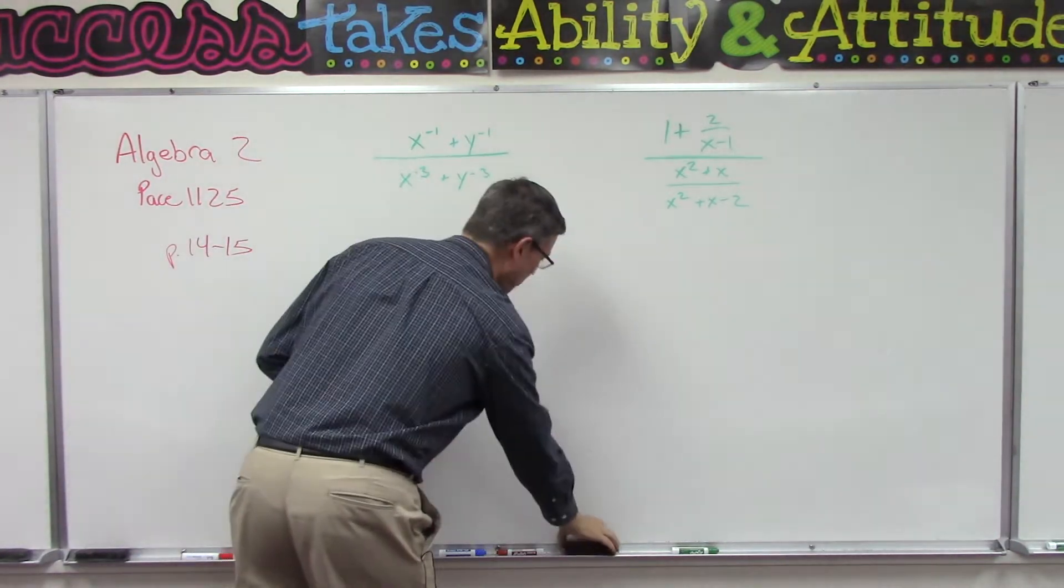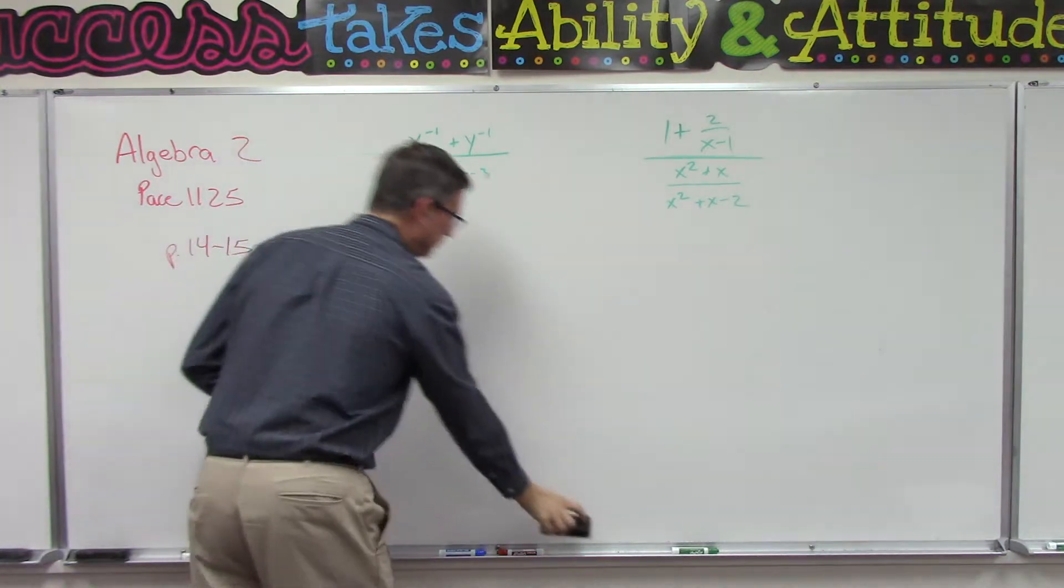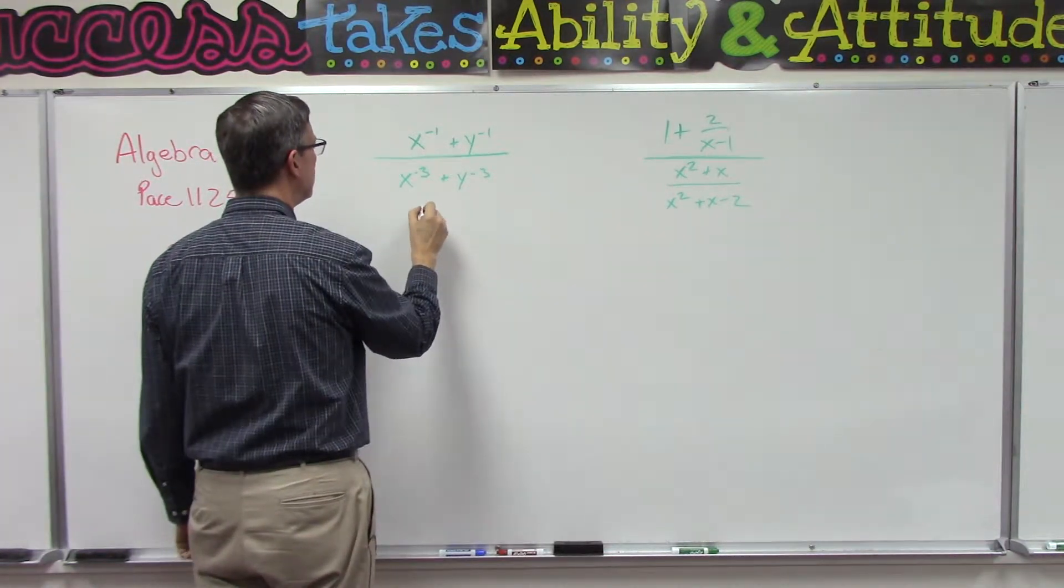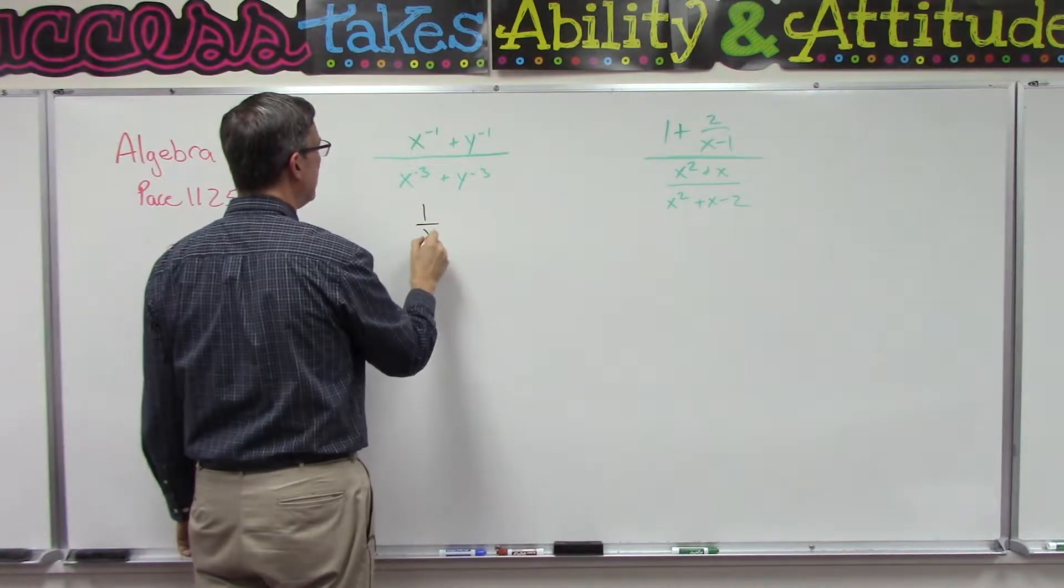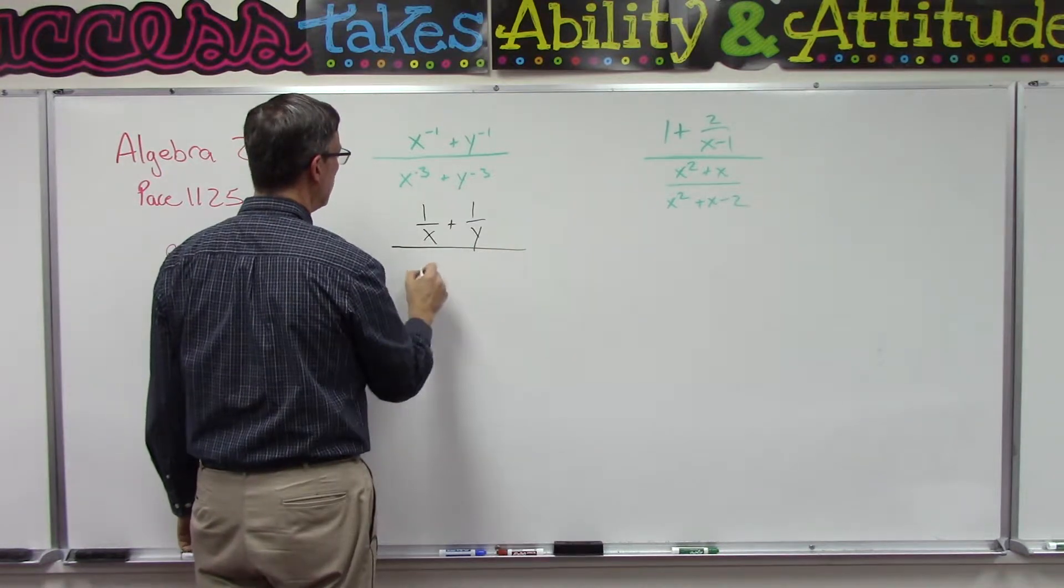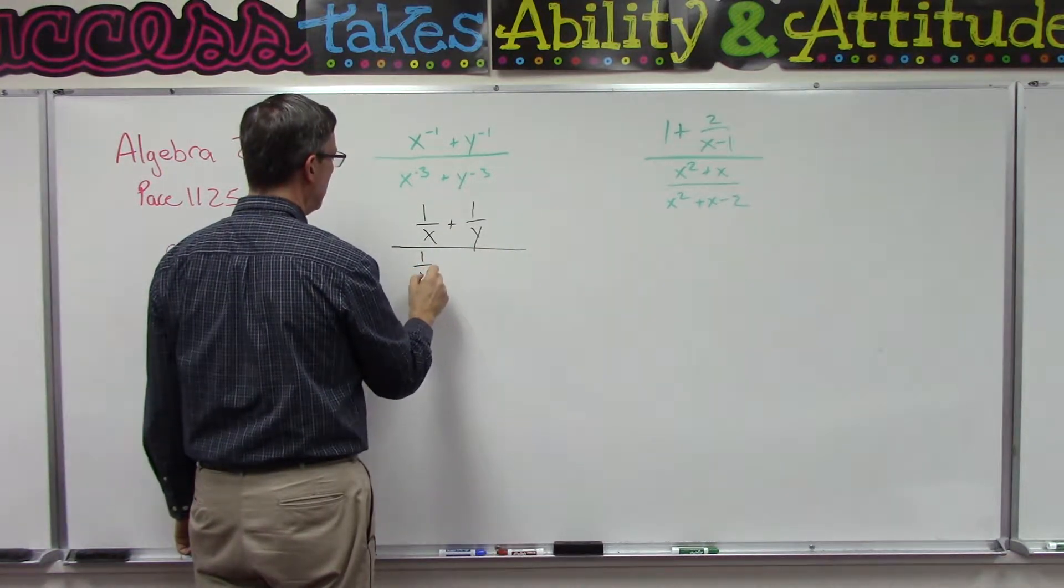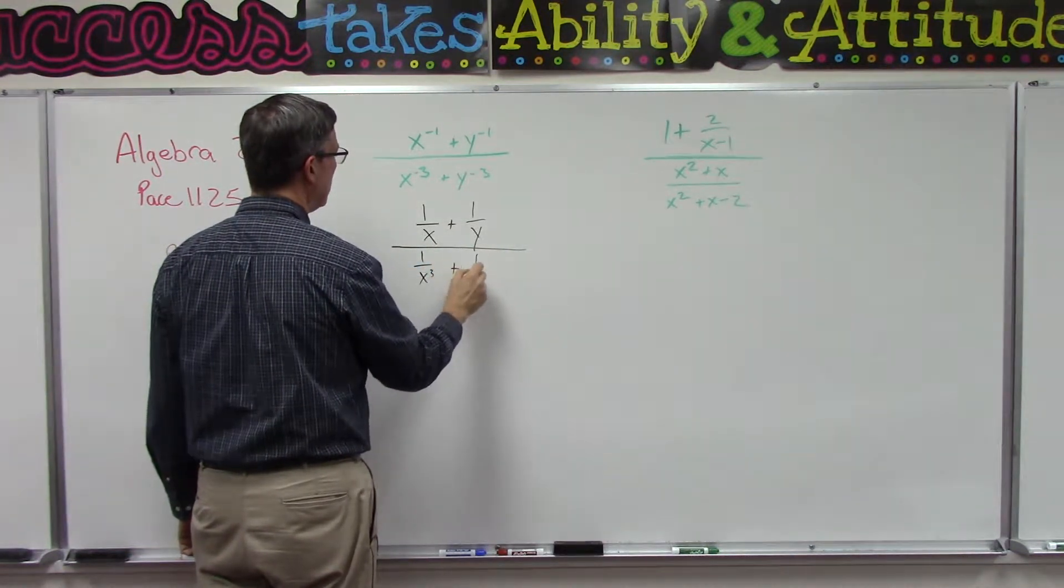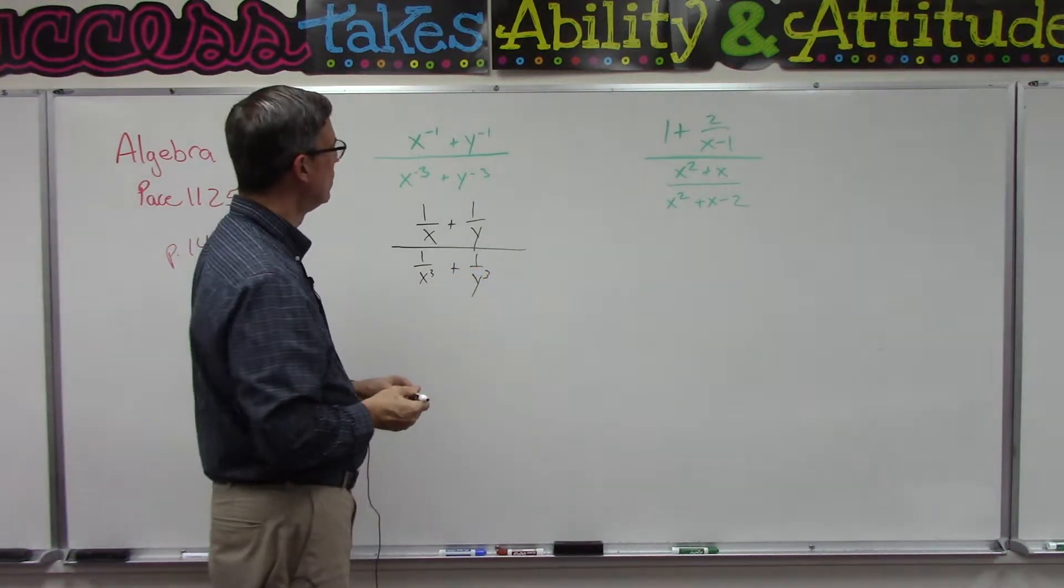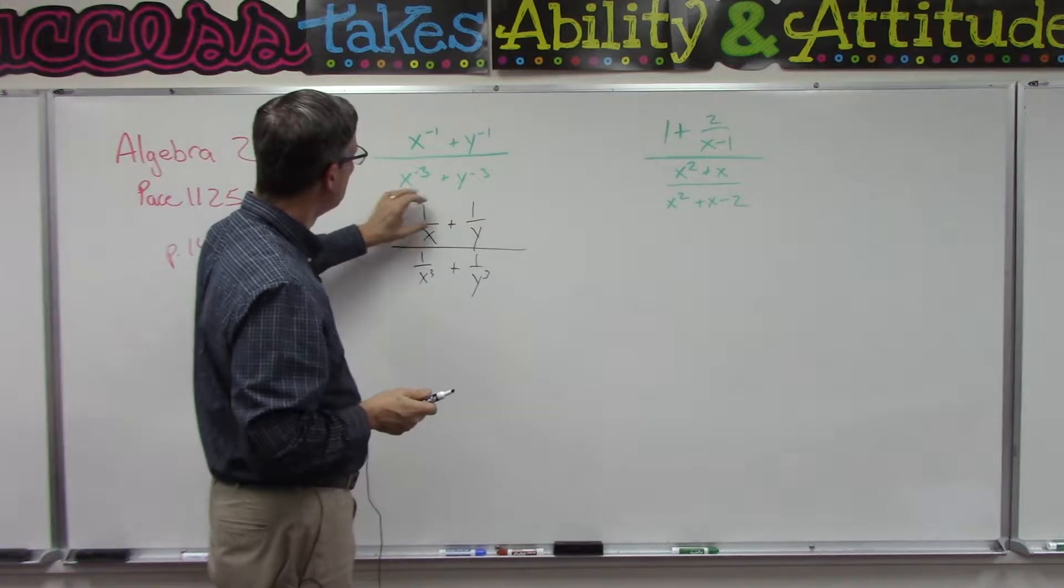Let's show you what we have to do here. We have to take this as its own individual term and write it as 1 over X plus 1 over Y, and then that's all over 1 over X to the third plus 1 over Y to the third. So each of these terms we had to invert.